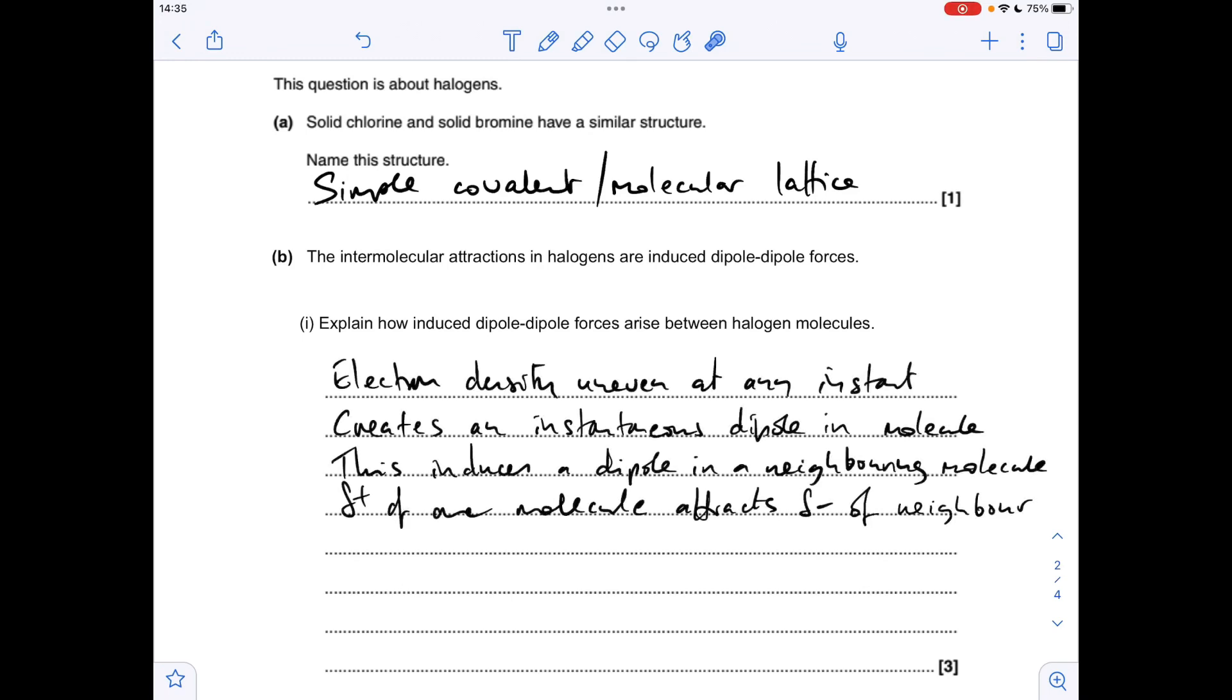About how induced dipole-dipole forces arise between halogen molecules. So we need to say something like this: electron density is uneven at any instant, so that creates an instantaneous dipole in the molecule.